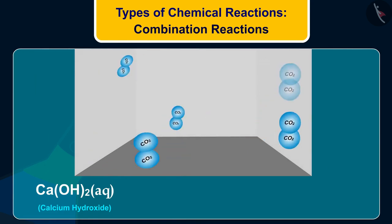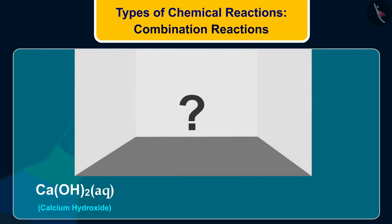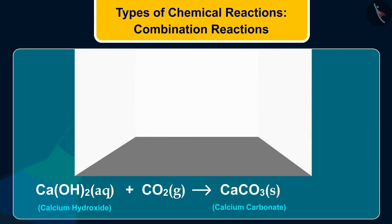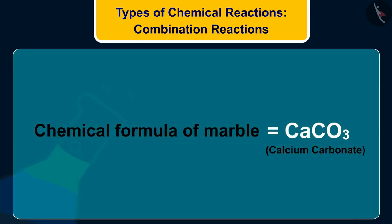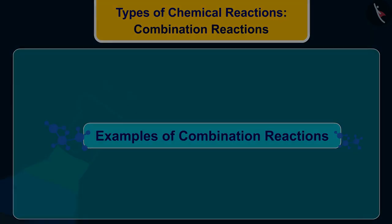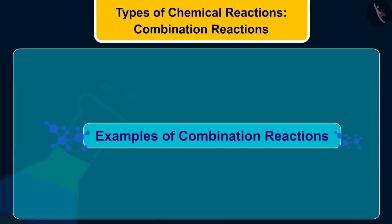Do you know what slaked lime is? Slaked lime is calcium hydroxide, Ca(OH)₂, and it is used for whitewashing walls. After two or three days you observe a white shining finish on the walls. This is because slaked lime reacts with carbon dioxide (CO₂) from the atmosphere and forms calcium carbonate, which makes the walls shine. The chemical formula of marble is also CaCO₃ — isn't it fun!